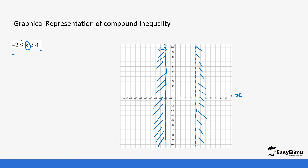This is contrary to how we worked with a simple inequality, because with a simple one you only had one condition. Now we have two, so you expect to see two lines on your graph. Let's do more examples.